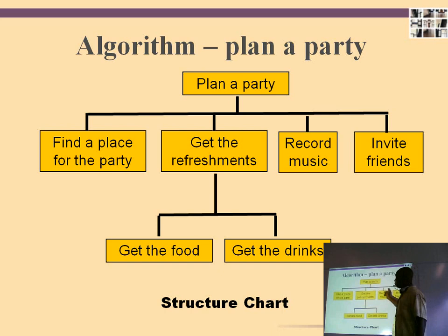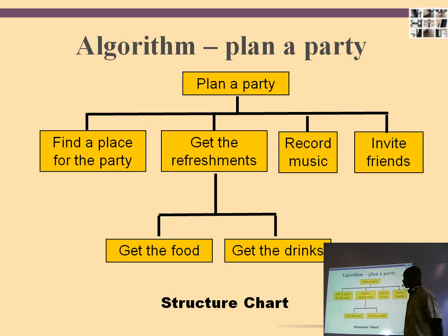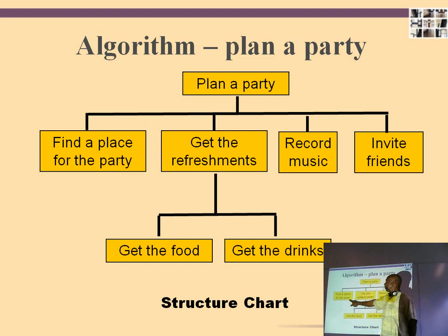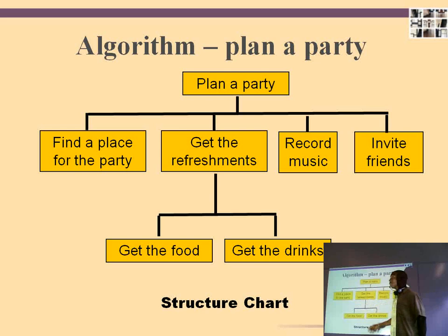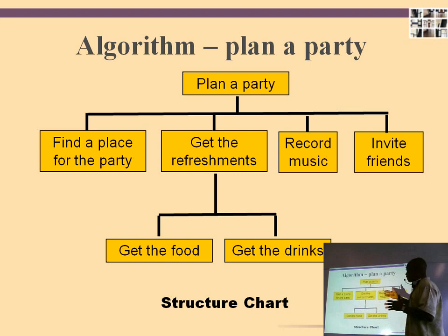But the nature of our solution is not necessarily that straightforward. For example, we cannot invite friends until we find a place. But we can record the music independent of time and place, perhaps. Also, getting refreshments depends upon both finding a place first and inviting friends so that we have a number of people attending to know how much refreshments to buy. The place may also dictate the kind of drink we can buy. So a lot depends upon how the analyst has decomposed the problem, and that decomposition can dictate the algorithms behind each subtask.